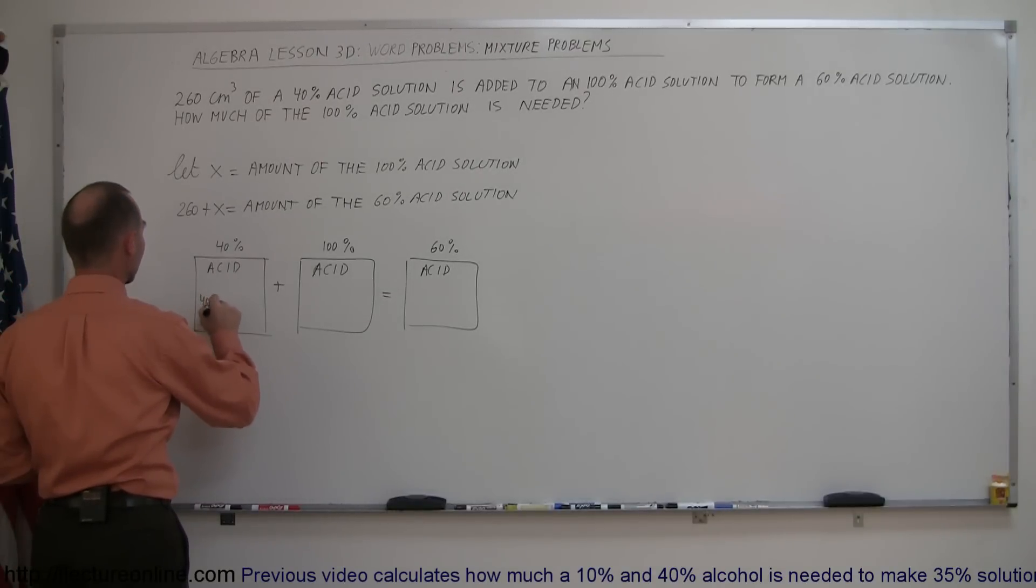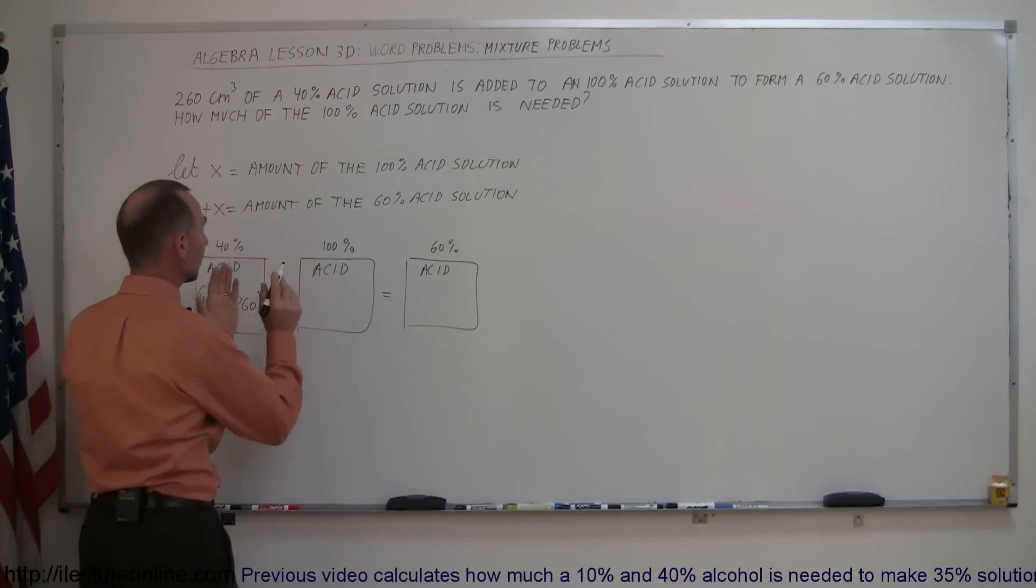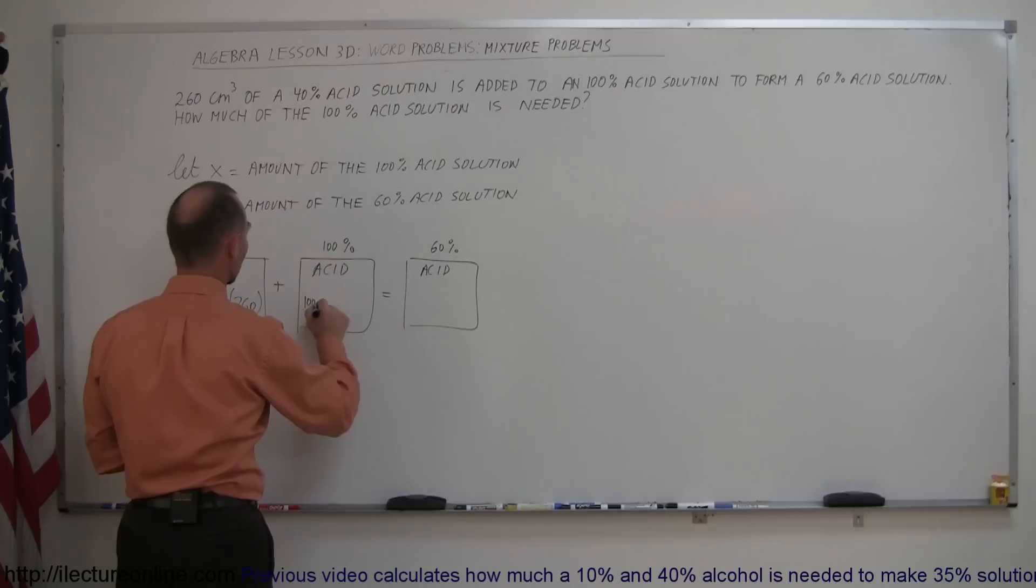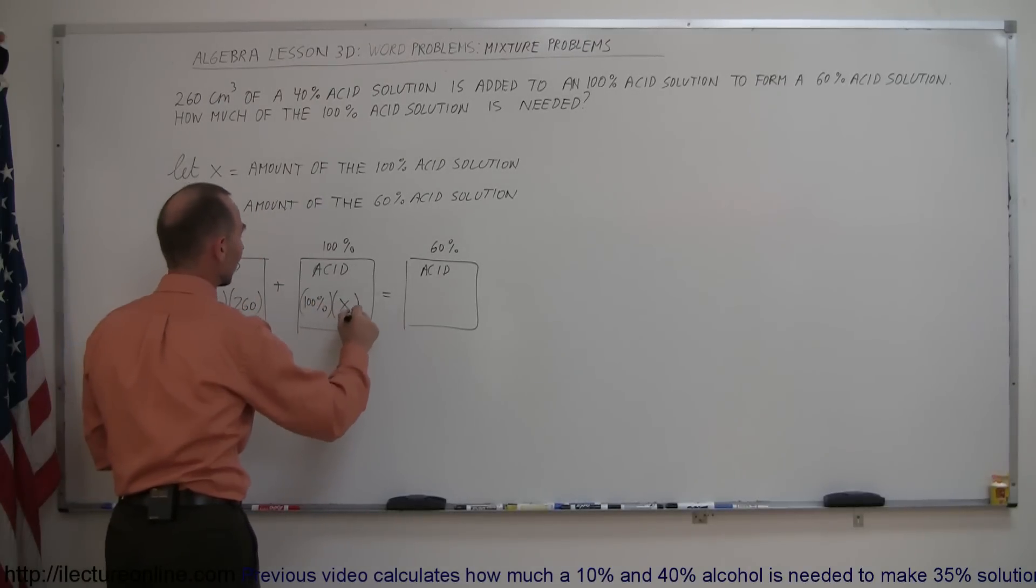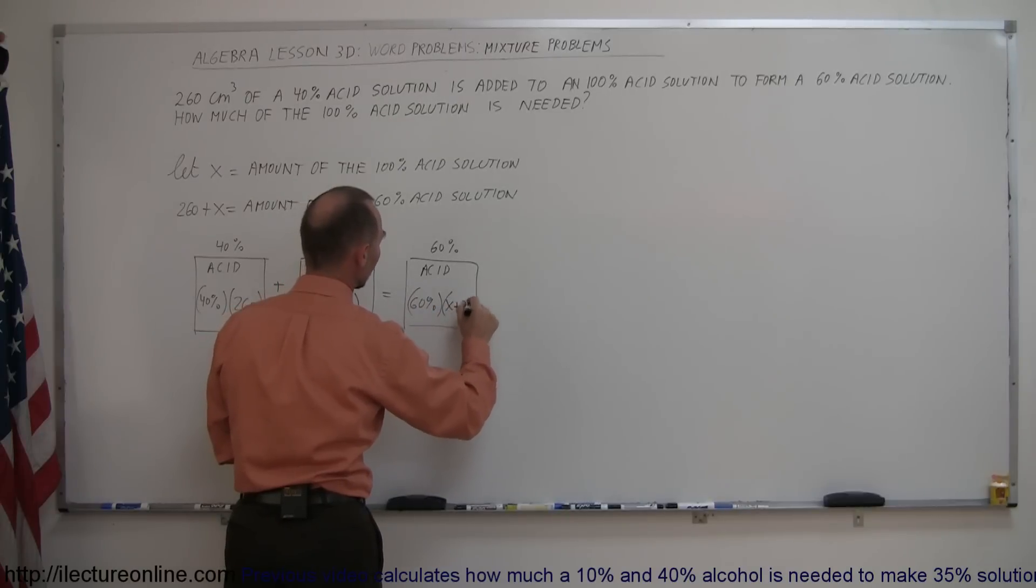So you take the 40% and you multiply it times the amount, which is 260 cubic centimeters, and here the concentration, 100% times how much acid? We said it was X equals the concentration, 60% times the total amount, which would be X plus 260.